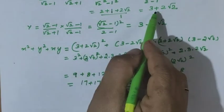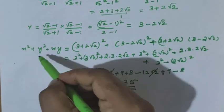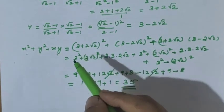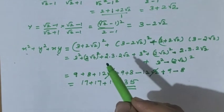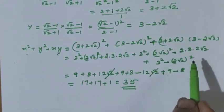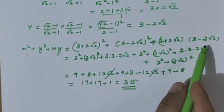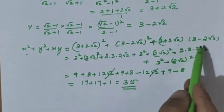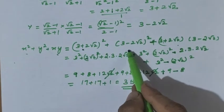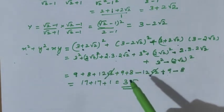Once we learn x equals 3 plus 2 root 2 and y equals 3 minus 2 root 2, just substitute in the given equation: 3 plus 2 root 2 squared plus 3 minus 2 root 2 squared plus 3 plus 2 root 2 into 3 minus 2 root 2. This is a plus b into a minus b, and a plus b whole square and a minus b whole square, so the middle terms will cancel.